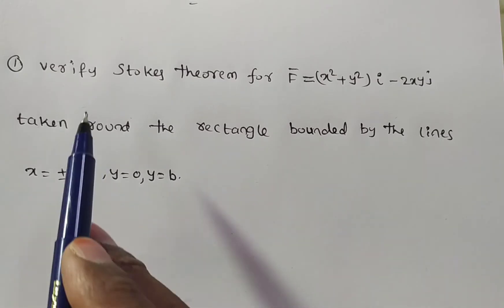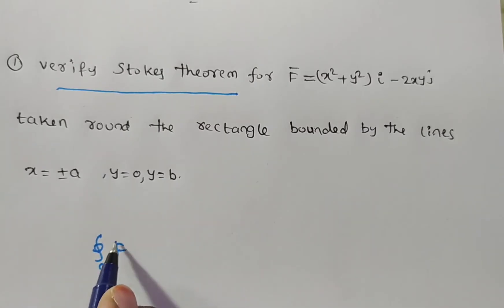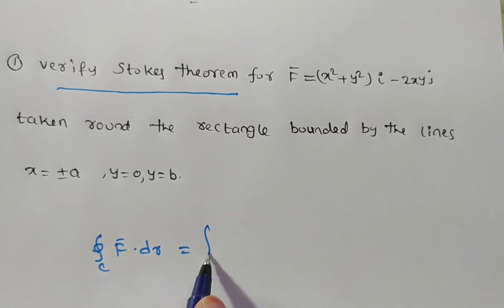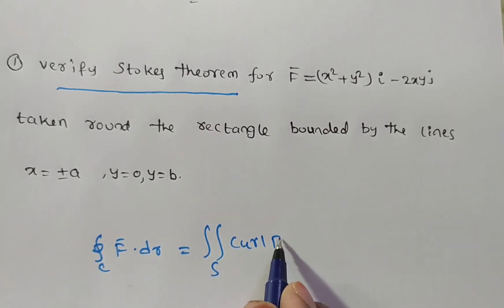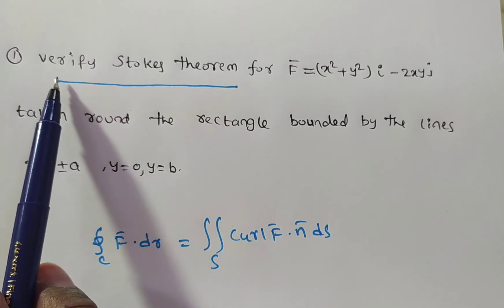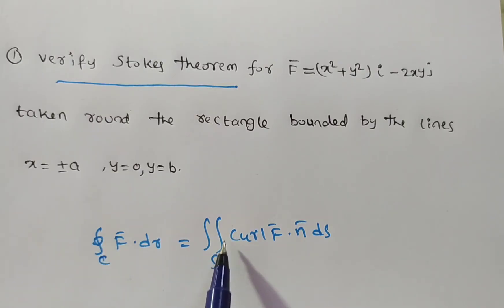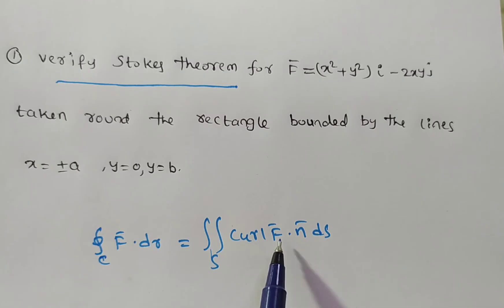We have to verify Stokes theorem. The statement of Stokes theorem is: the integral over C of f̄·dr̄ equals the double integral over S of curl f̄·n̄ dS. Verify means we have to prove LHS equals RHS. The LHS is a line integral along a curve, and the RHS is a surface integral — that is the relation between line and surface integrals called Stokes theorem.